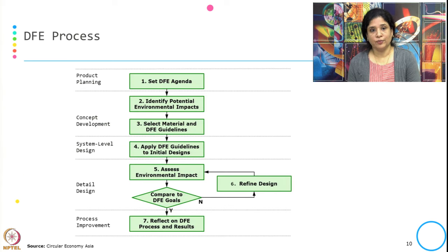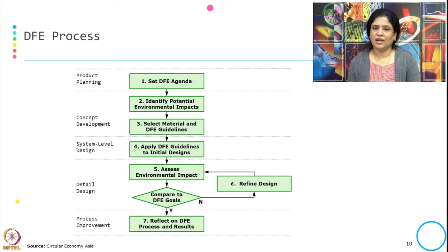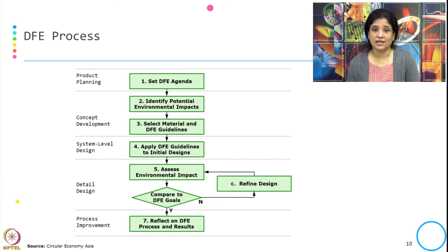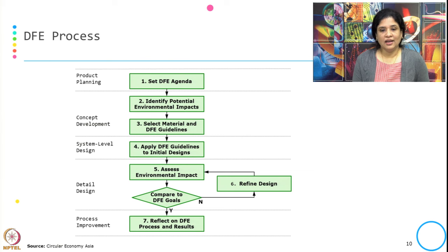This is the DfE process. At the stage of product planning, the DfE agenda is set. In concept development, we identify the potential environmental impact and select the material and DfE guidelines. In the system level design, we apply the DfE guideline to the initial design. Then after the DfE guideline is applied, the environmental impact is assessed again. Then the design is refined if needed compared to the DfE goal — if the environmental impact is more or not matching with the goal, the design is refined. And again assessing the environmental impact, and finally reflecting the DfE on the process and result, that is in process improvement.